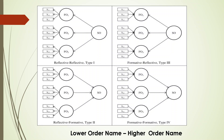Depending on this, there exist four types of relationships. The nomenclature always starts with the lower-order name and then the higher-order name: reflective-reflective, formative-reflective, reflective-formative, and formative-formative. If arrows are coming inside the construct, it is formative.